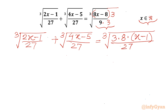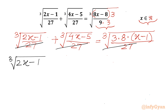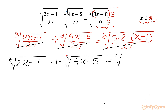Now we will multiply our equation by cube root of 27 so we can cancel the denominator from both sides. So I can write: cube root of (2x − 1) plus cube root of (4x − 5) equal to cube root of 24 times (x − 1).